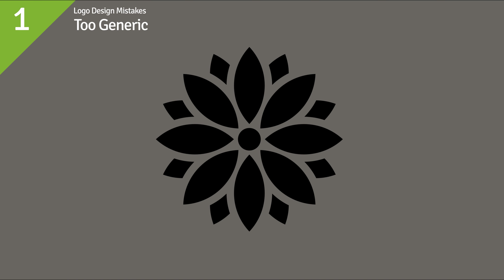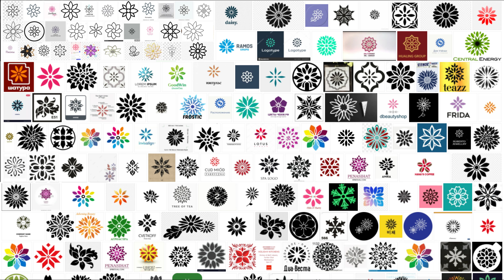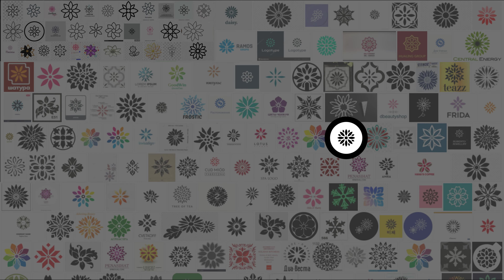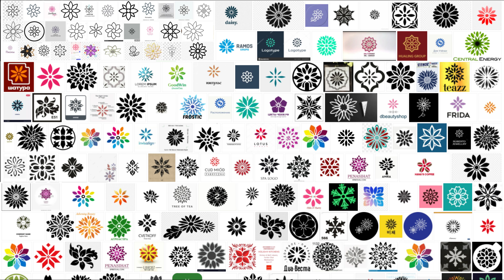Mistake number one: too generic. Here we have a flower — a perfectly pretty and technically well-drawn flower. But if I placed this logo among some of its brothers and sisters, it will just melt away. There isn't much to choose between our logo and all the others. There's just nothing special about this logo. It doesn't have a special character or look or style or theme. It is just another flower logo constructed the same way as thousands of similar flower logos. A logo has to be memorable, and this one just isn't.